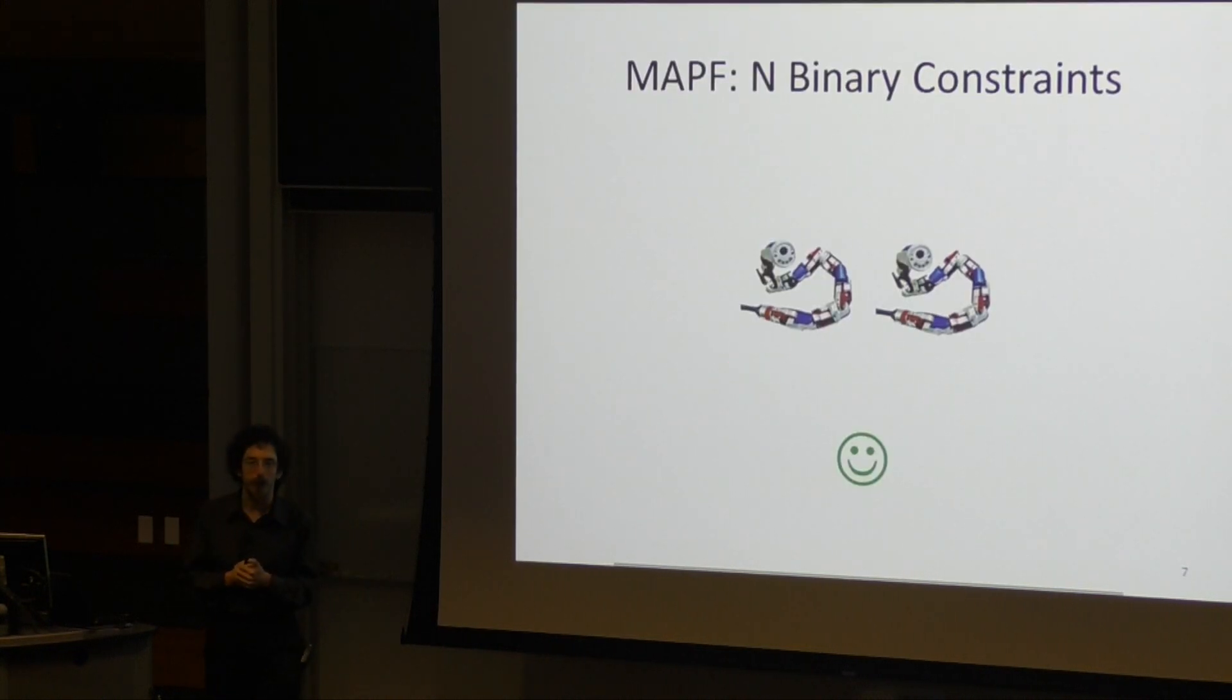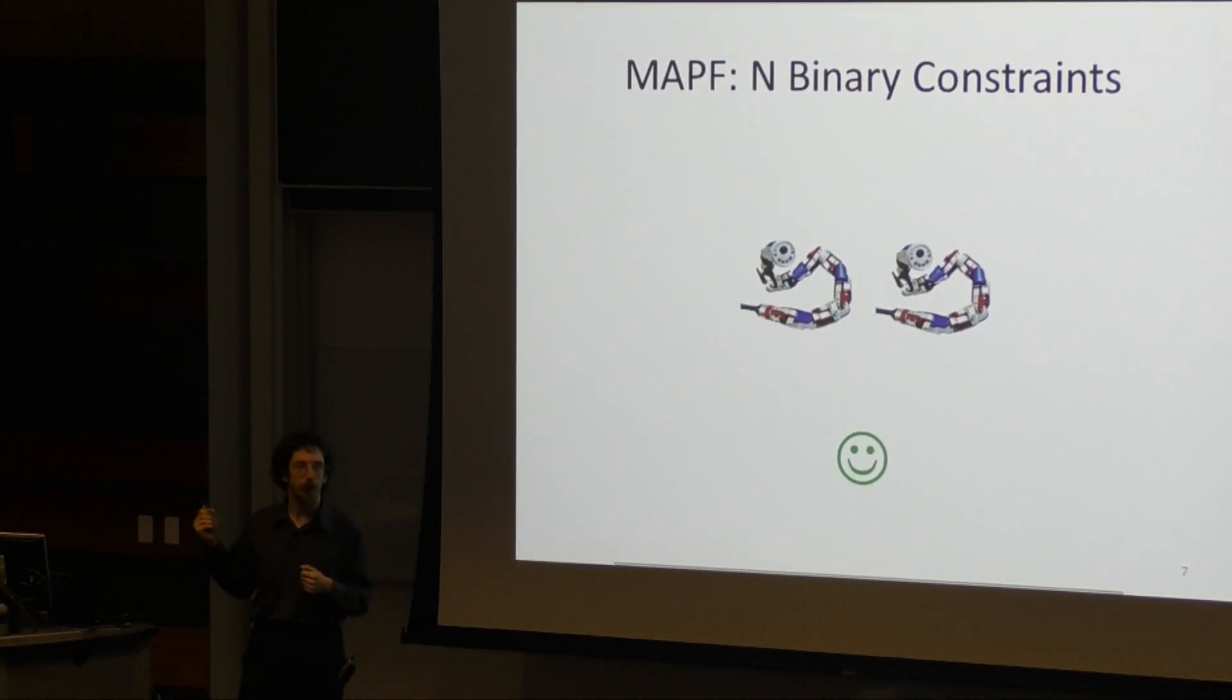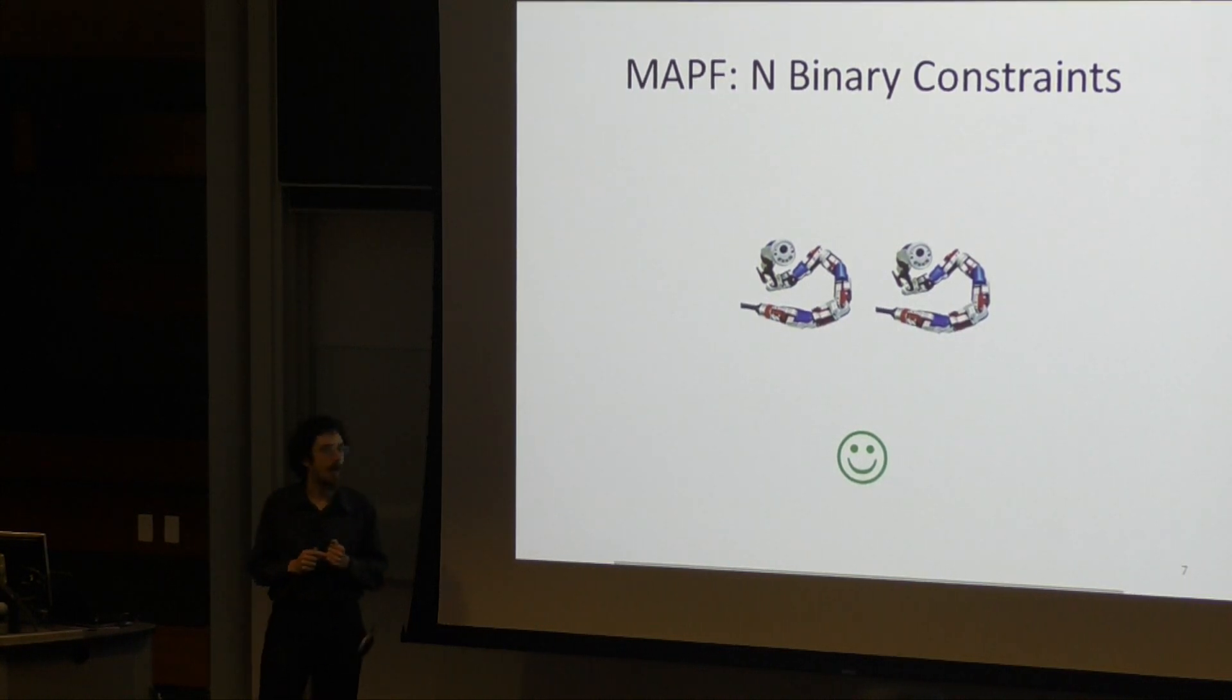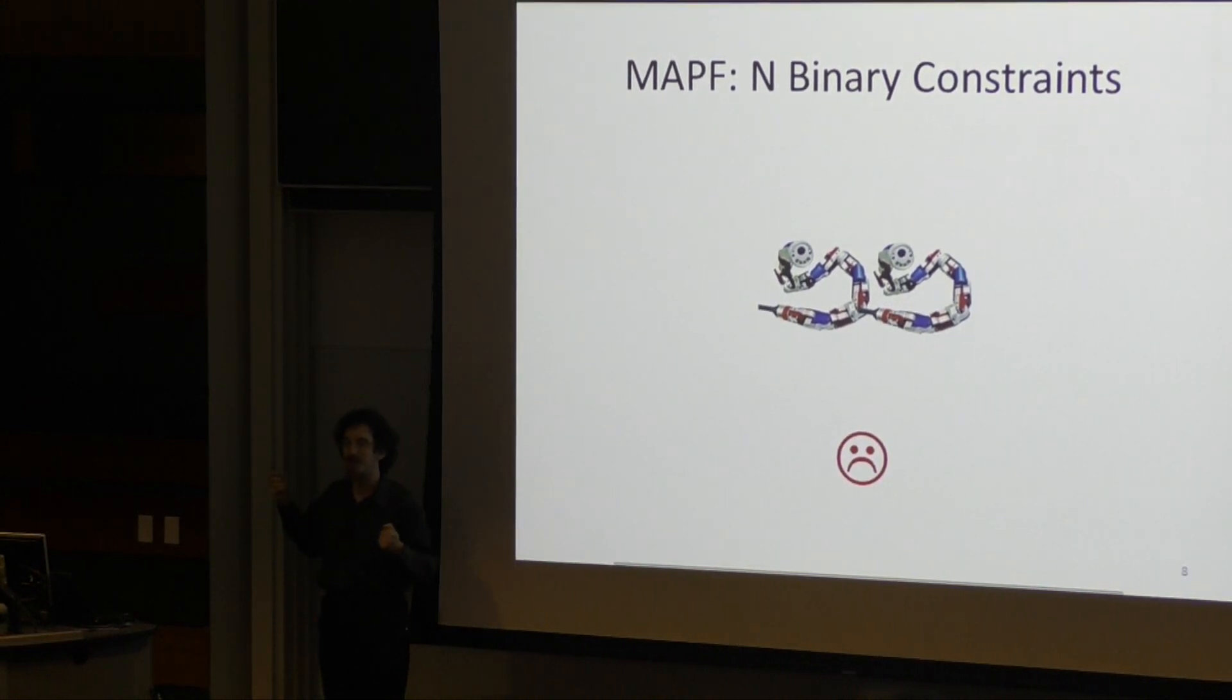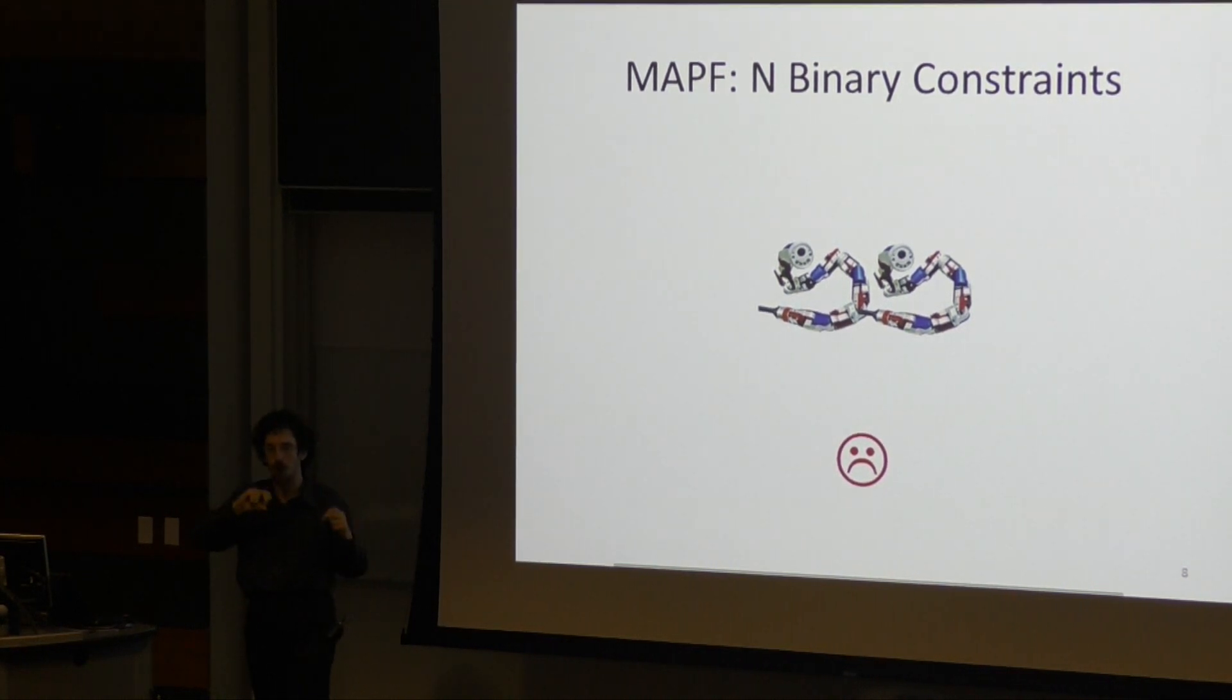The MAPF problem has two important properties. The first is that it's subject to inseparable binary constraints. Each robot is either in collision with another robot or not in collision. And each of these robots has its own separate constraint.